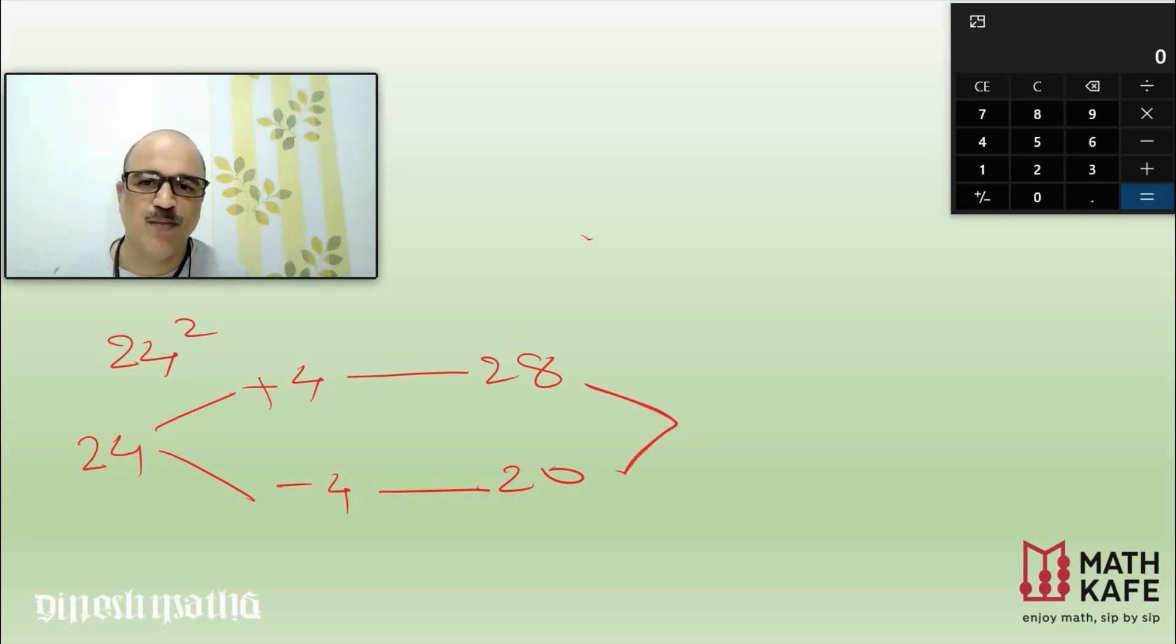Multiply both together: 28 times 20. You know that's easy to get - just the double of 28, that's 56, and ending with a zero, so 560 plus the 4 square. 4 square is 16, that is equal to 576.